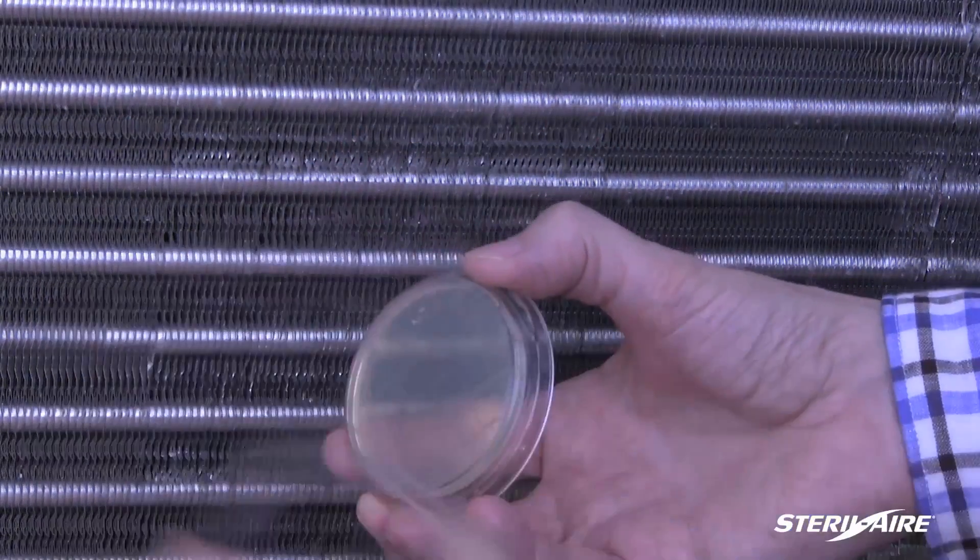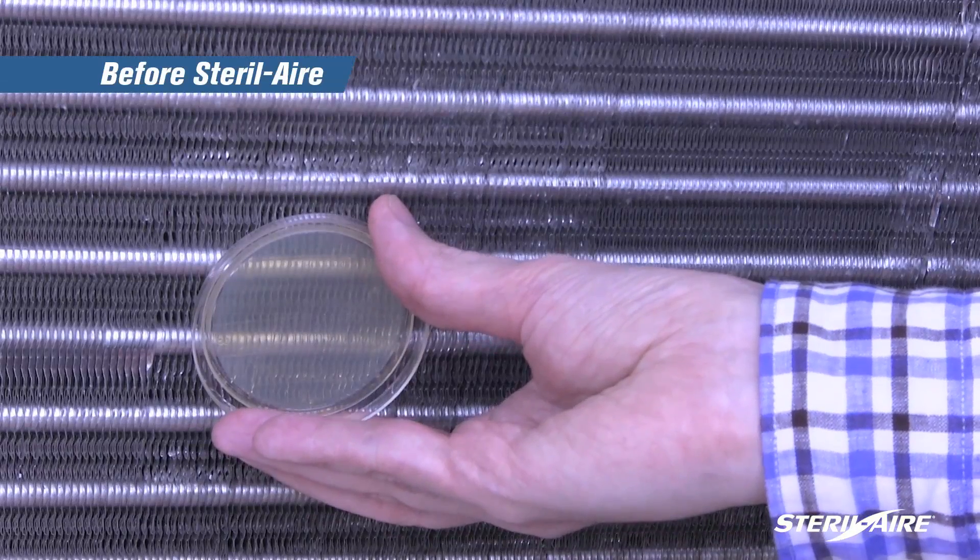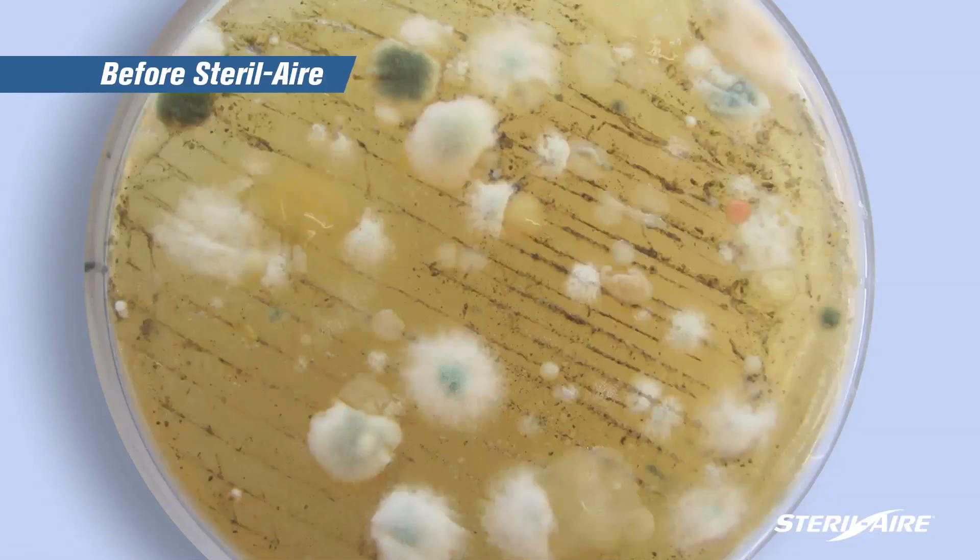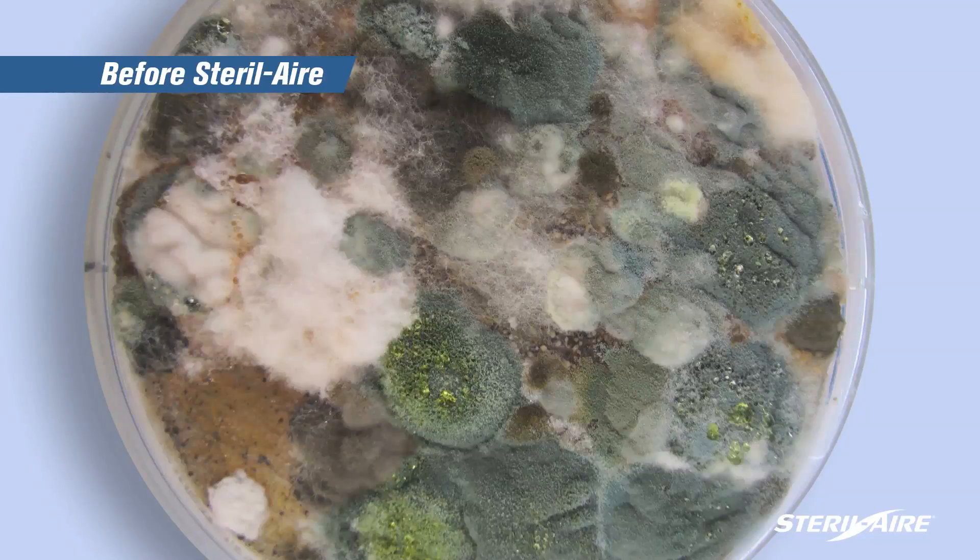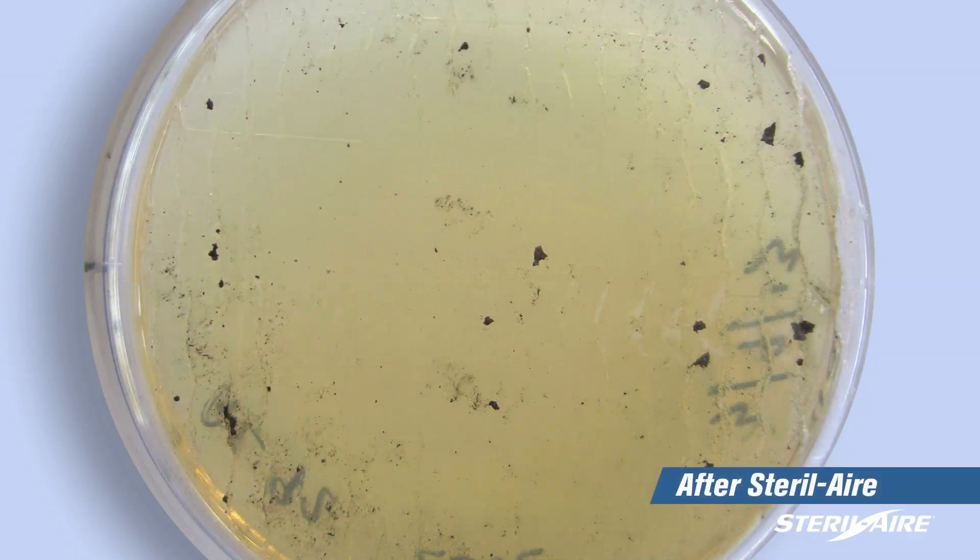As proven by the Singapore Parliament Building Study, a simpler way of verifying coil improvement is with contact plates that provide quick visual evidence of the presence of mold in the coil and ducts, as well as verification of its removal by sterile air.